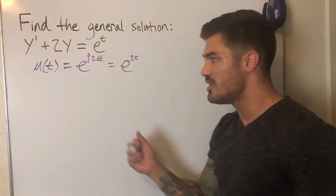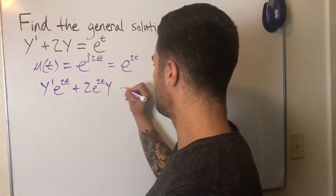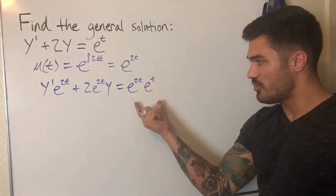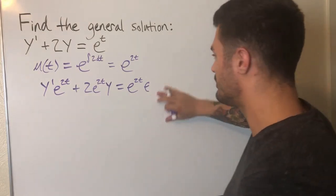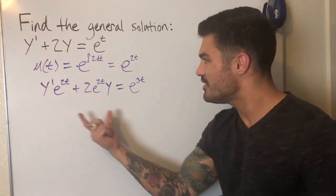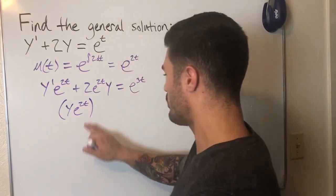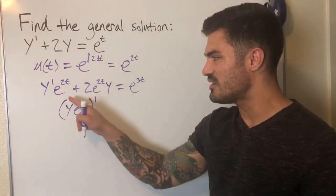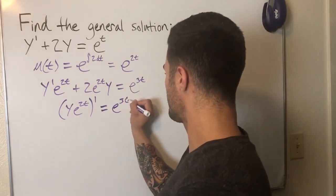We multiply both sides by e to the 2t. On the left we get y prime e to the 2t plus 2 e to the 2t times y. On the right, e to the 2t times e to the t — same base, add exponents — gives e to the 3t. Now we confirm the left side is a product rule: derivative of the first times the second, plus derivative of the second times the first. It all lines up.